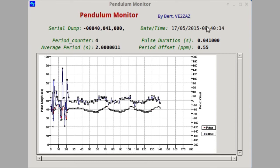So the numbers shown are self-explanatory. This is the serial dump, the data that's sent by the PIC, and it's used to compute everything here. And it always shows the pulse duration. Right now we're pulsing at about 41 milliseconds. And the average period, as I mentioned, is computed over 10 periods. So 20 seconds. And this is the period offset in parts per million.